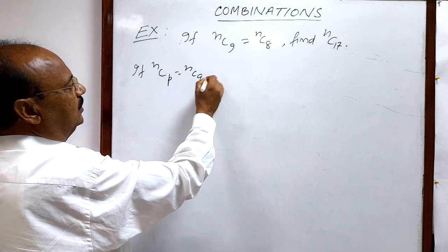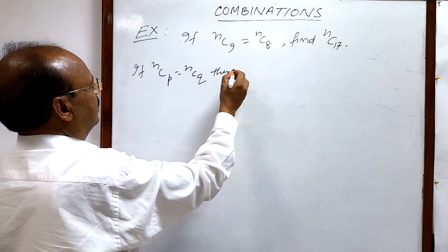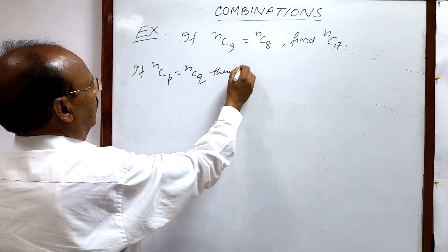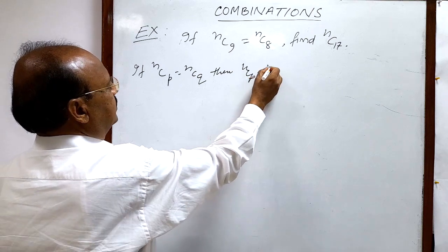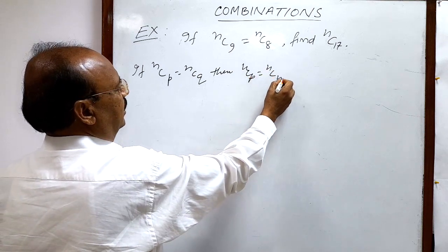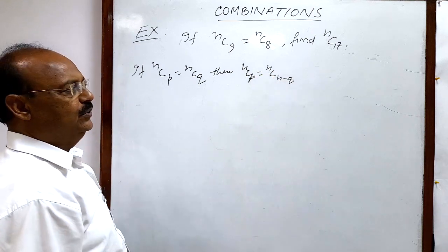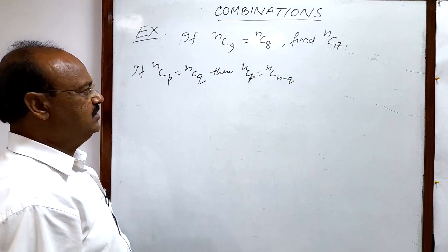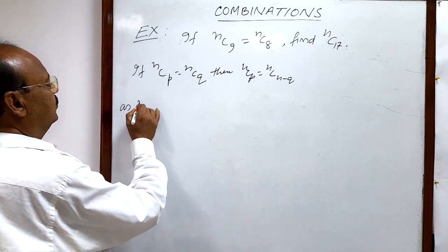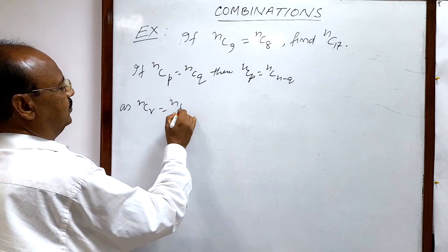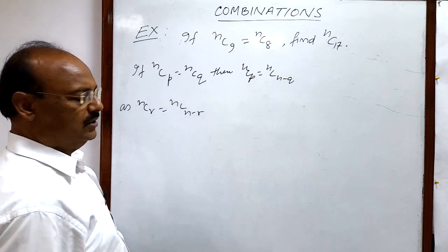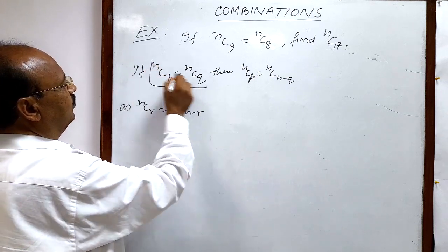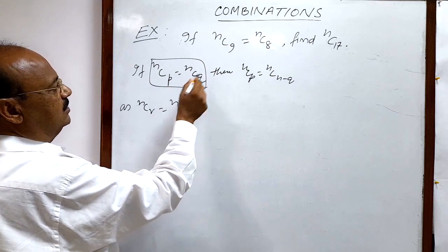then we can write nCp is equal to nC(n-q) also, because as we know, nCr is equal to nC(n-r).